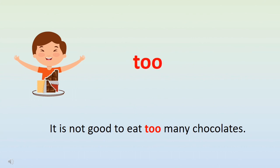The word is to. The meaning of to is more than or in addition to something. Let's read a sentence with to: it is not good to eat too many chocolates. So here we are not talking about one chocolate, but we are talking about many chocolates.